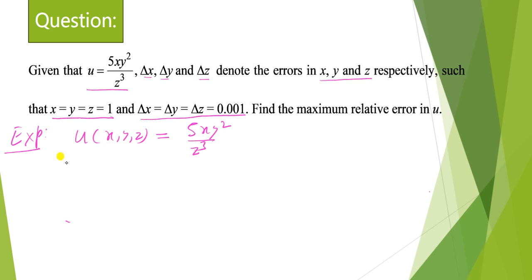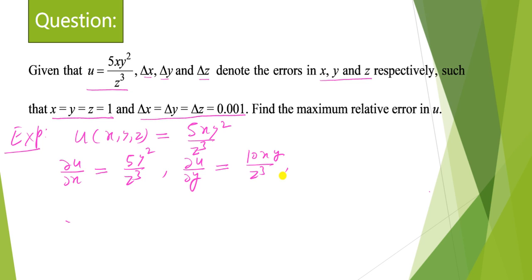The function u depends on x, y, z and equals 5xy² upon ze³. Computing the partial derivative of u with respect to x, keeping y and z constant, gives del u by del x equals 5y² upon ze³. The partial derivative with respect to y, keeping x and z constant, gives del u by del y equals 10xy upon ze³. And the partial derivative with respect to z gives del u by del z equals minus 15xy² upon ze⁴.